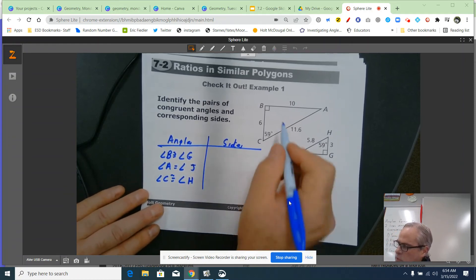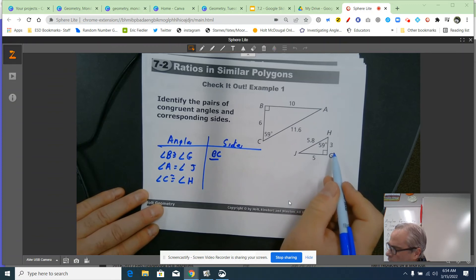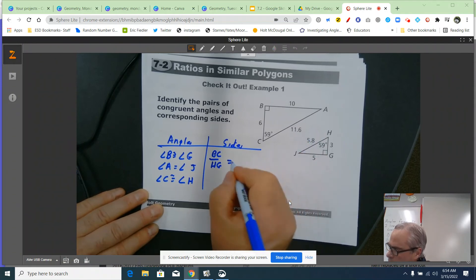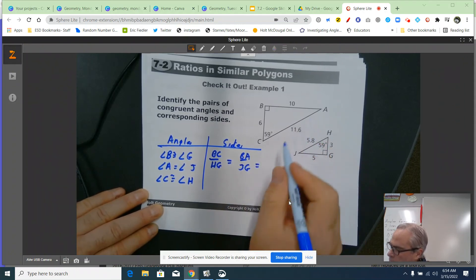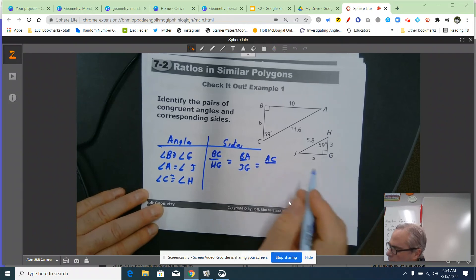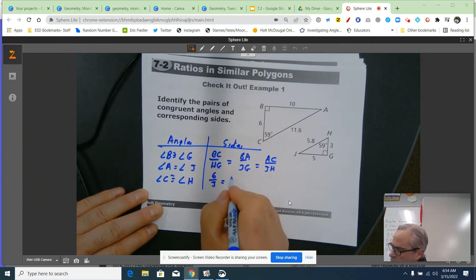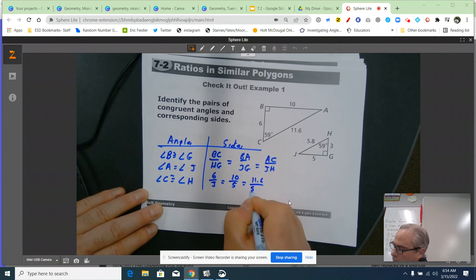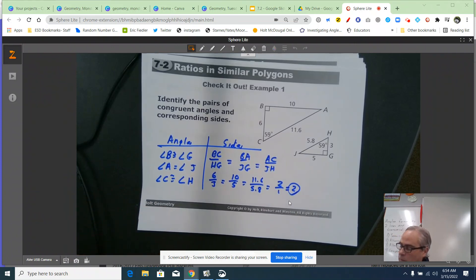How about sides? Shortest side for the bigger triangle is BC over the shorter side here is HG. And is that equal to the middle side, which is 10, BA. Middle side here is JG. Biggest side over here is AC. Biggest side over here is JH. So, BC over HG is 6 over 3. BA over JG is 10 over 5. And then our last one is 11.6 over 5.8. This one also happens to be equal to 2 over 1 or 2, which is just by chance. So, yeah, they are going to be similar triangles.